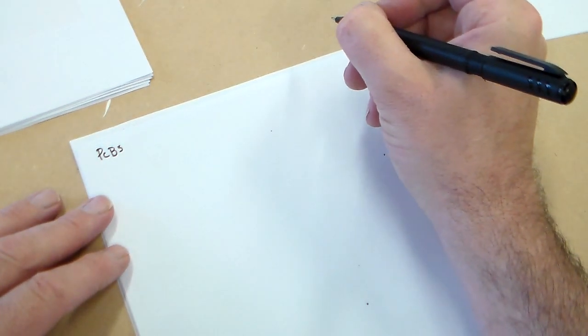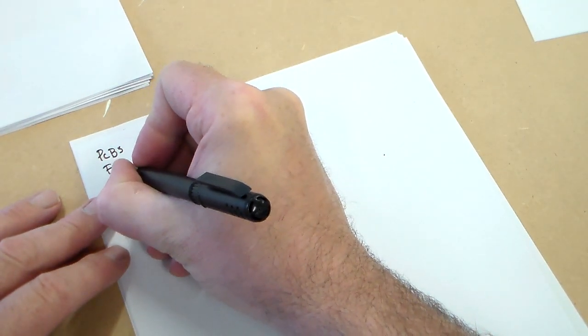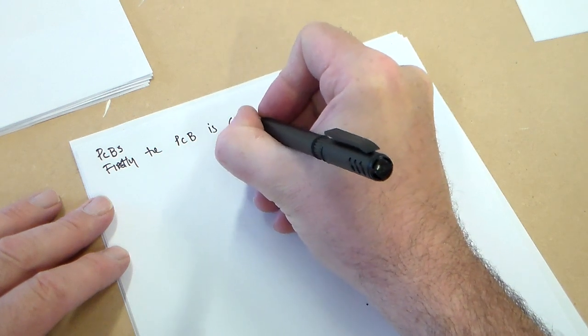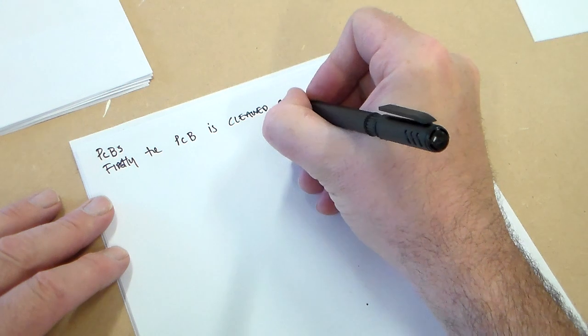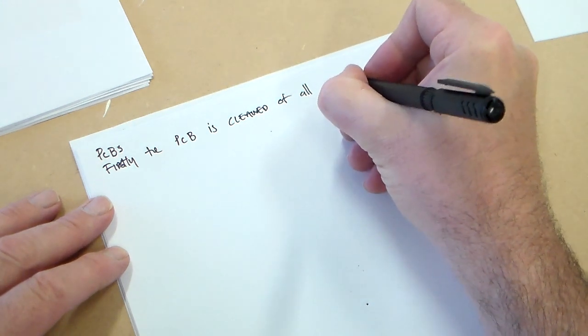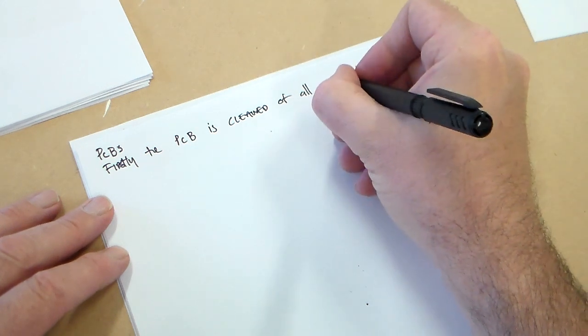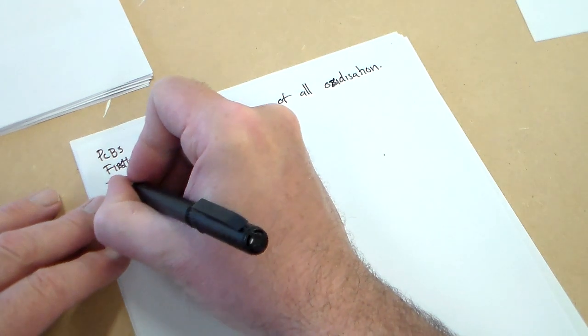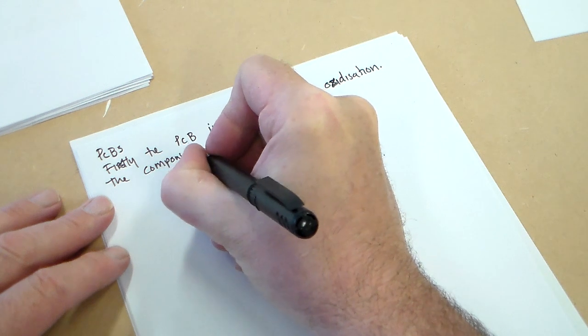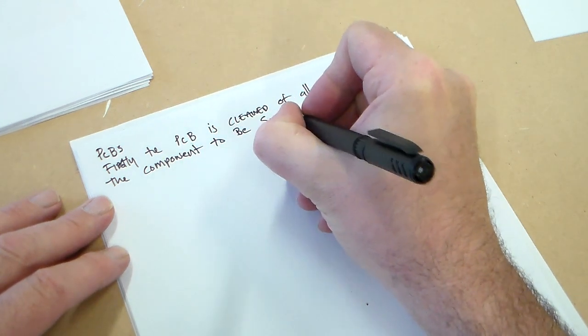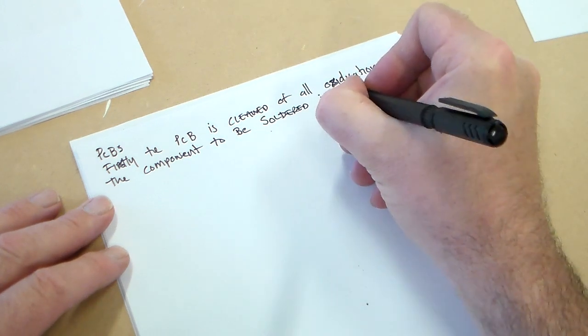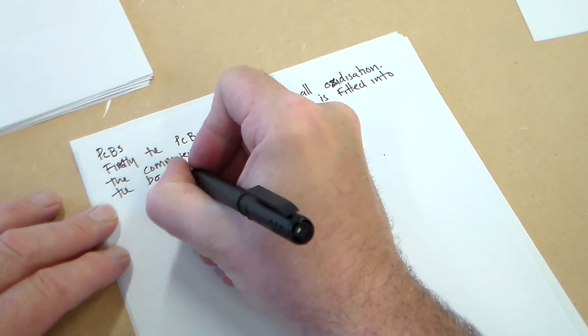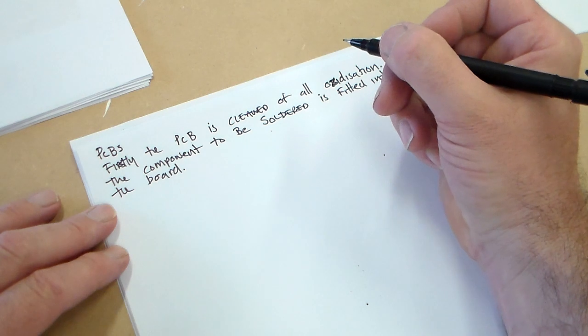And what can we say? Okay, so we're saying the process. Firstly, the PCB is cleaned of all oxidization. The component to be soldered is fitted into the board.